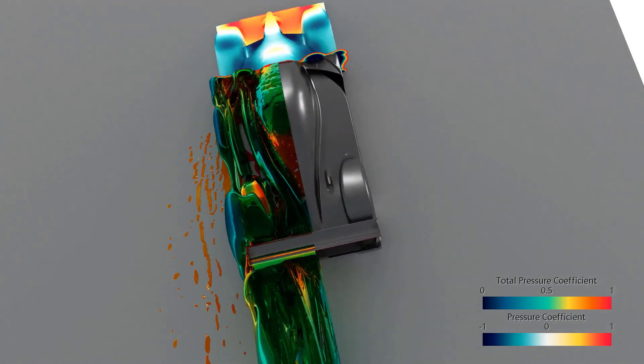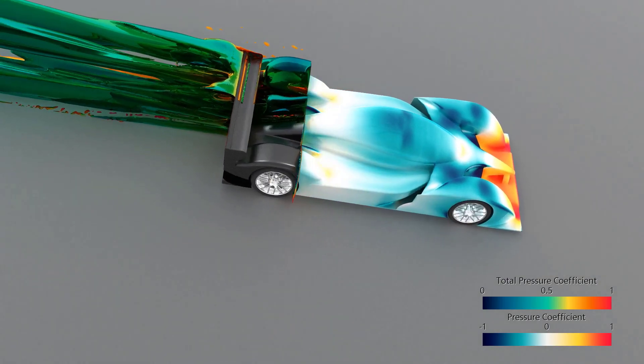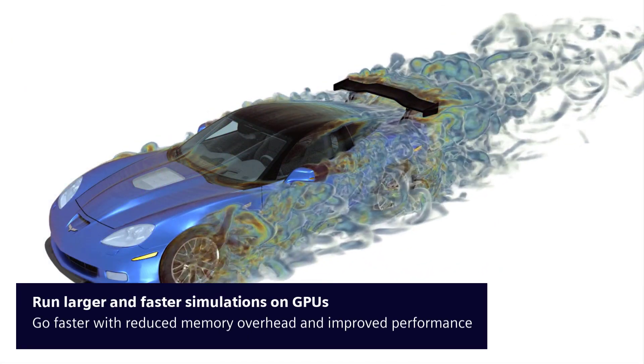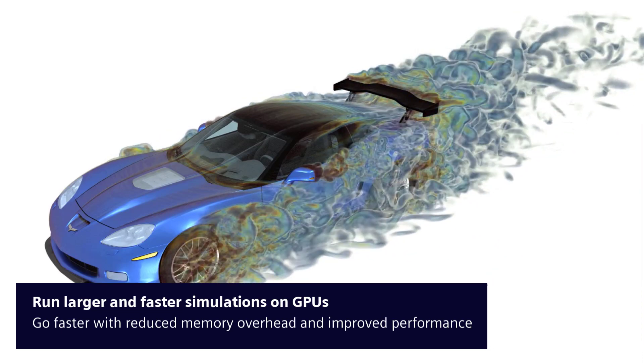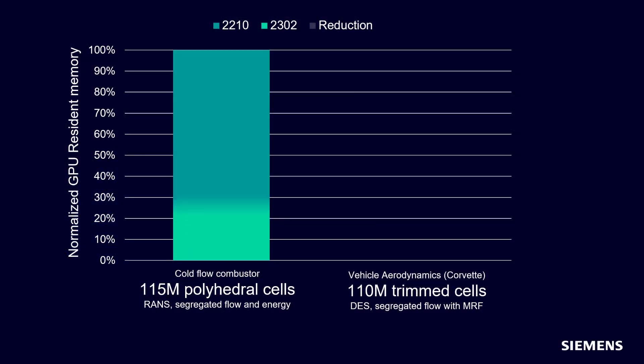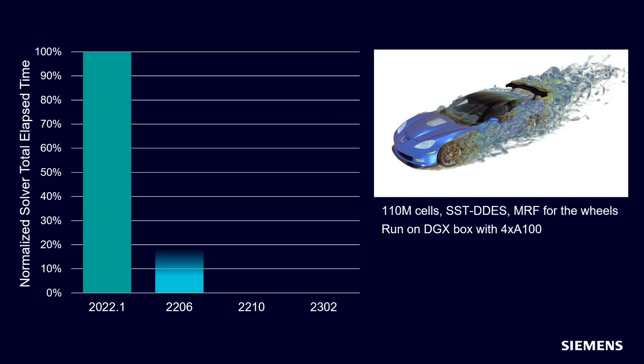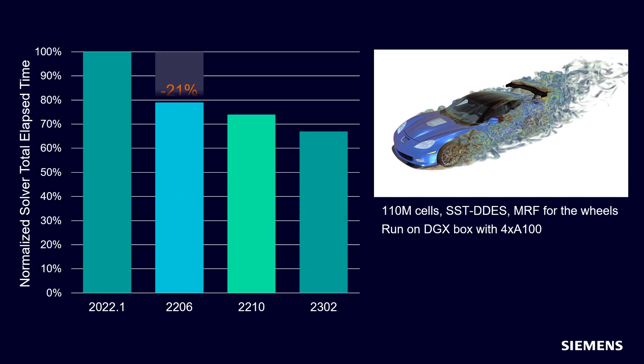Simcenter Stasis Mplus 2302 comes with a memory consumption reduction of up to 40% on GPUs, which enables you to fit larger simulations onto a single GPU with immediate performance benefits.